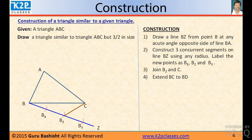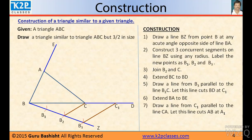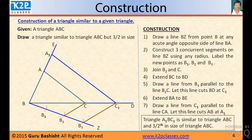Extend BC to BD. Draw a line from B3 parallel to the line B2C and let this line cut BD at C1. Extend line BA. Draw a line from C1 parallel to the line CA and let this line meet BA at A1. Triangle A1BC1 is similar to triangle ABC and it is 3 by 2 in the size of triangle ABC.